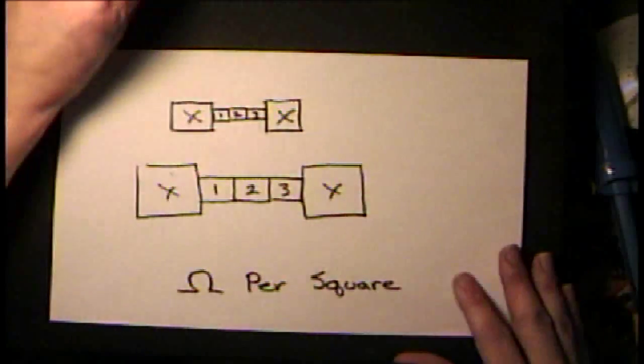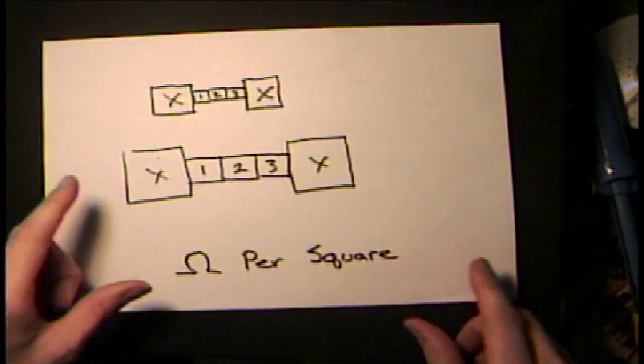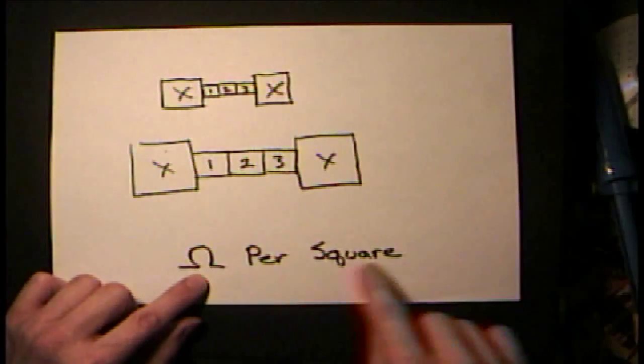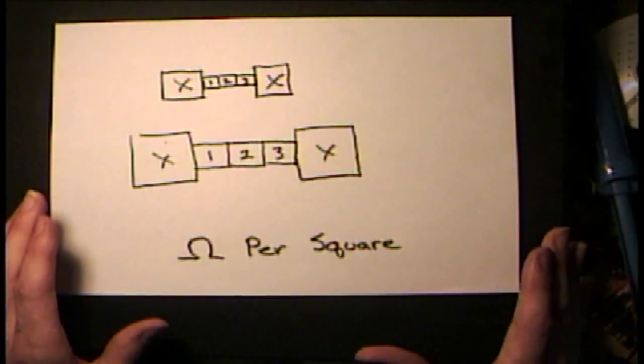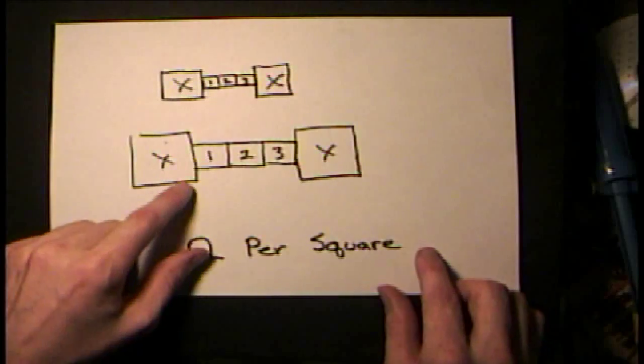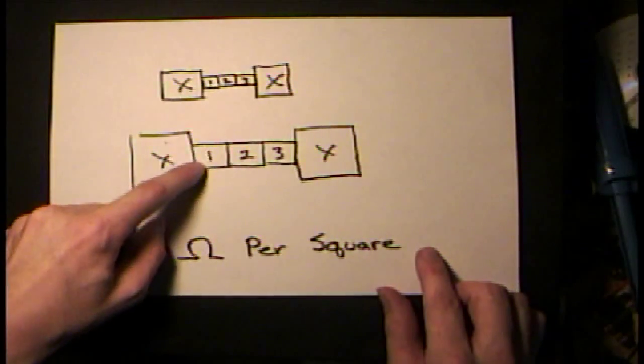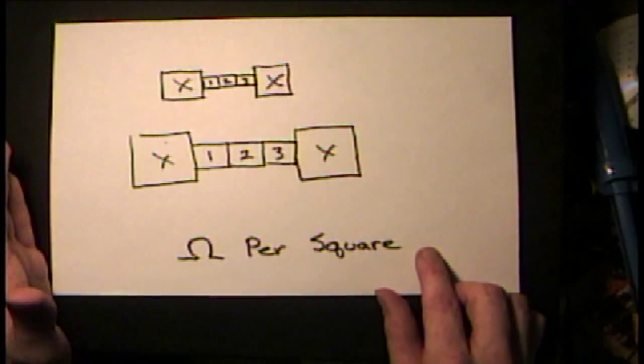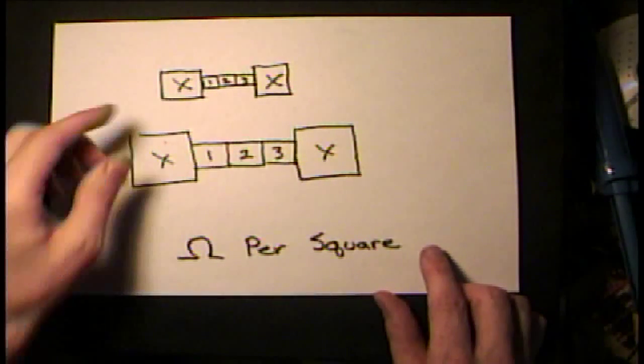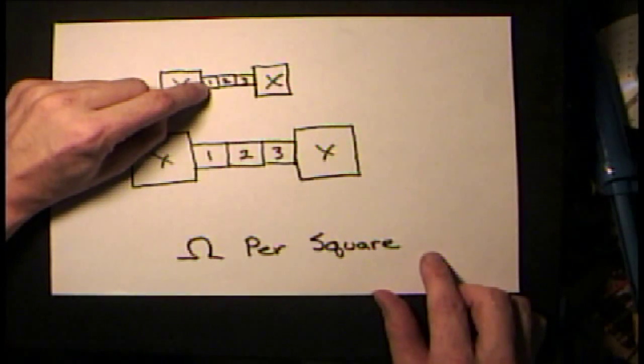An interesting fact about wafers is that they have ohms per square. When you start building features on your wafer, if you build features that are square shape, they'll always have the same ohms of resistance no matter if they're a small feature size.